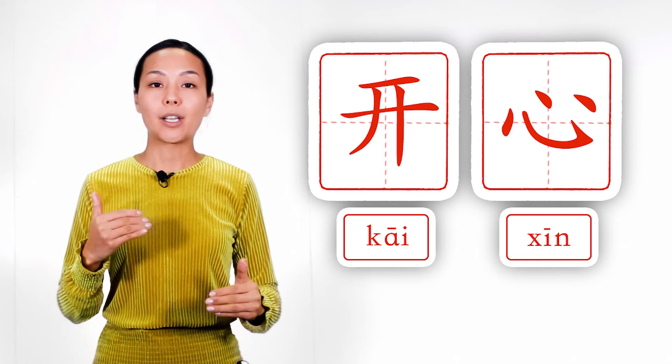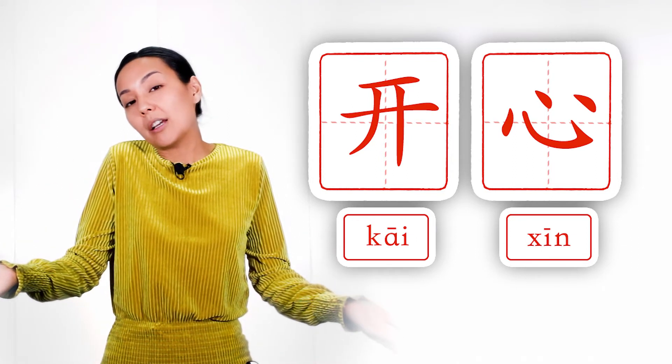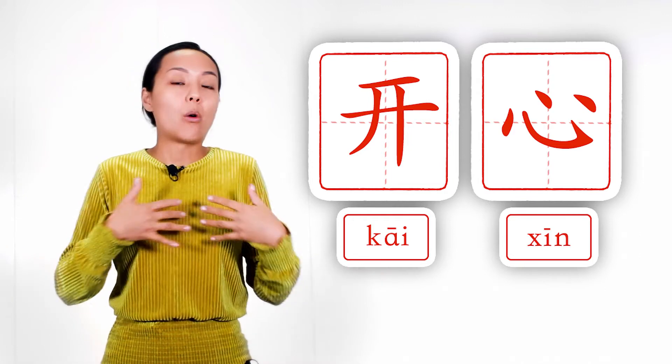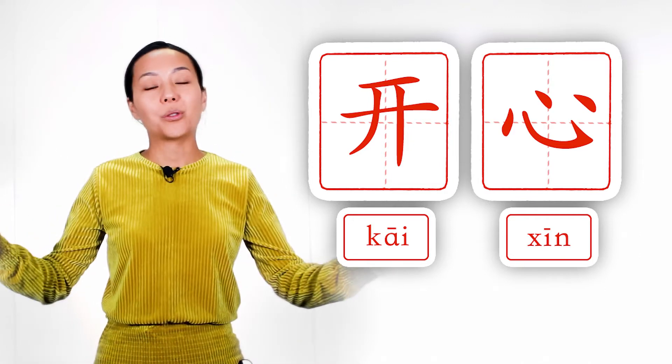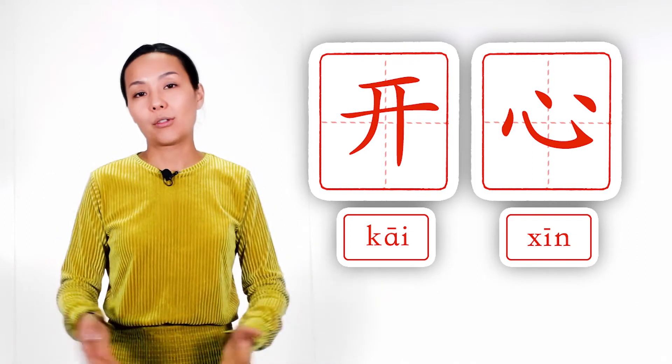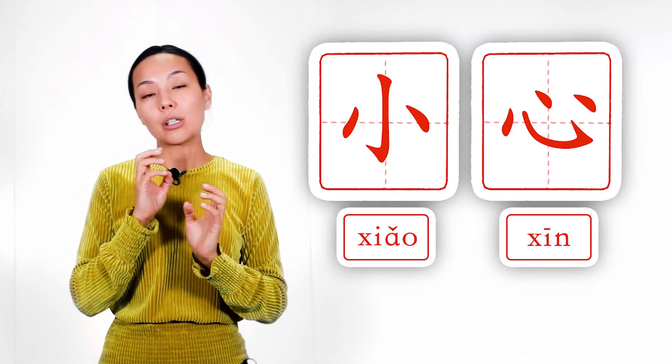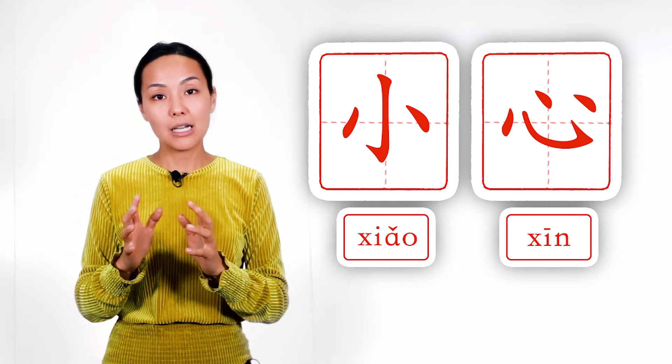And now let's look at examples where heart is a part of a word. And here it's obvious when we are happy our heart is open, we want to share our happiness, and it's universal for all countries. And the next example is a phrase be careful, xiao xin, which literally we translate small heart.